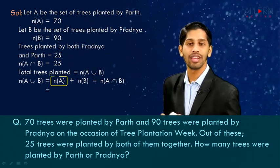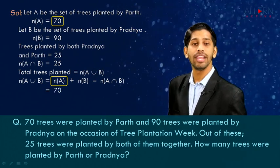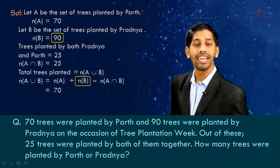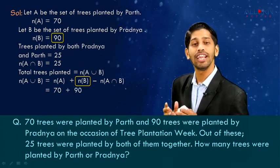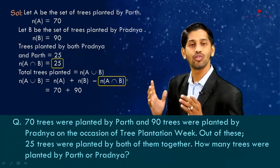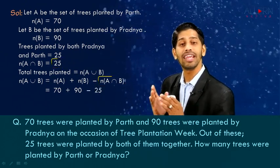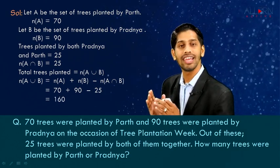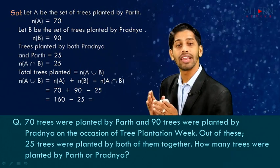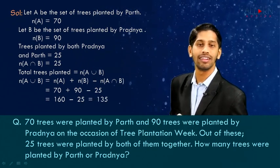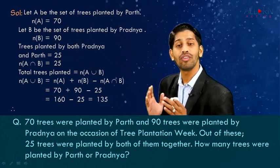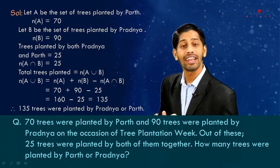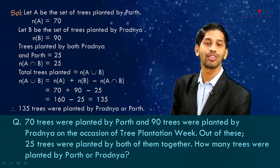Let's substitute the values given to us. In place of n(A) we substitute 70, plus in place of n(B) we substitute 90, minus in place of n(A ∩ B) we substitute 25. Now let's do the calculation: 70 + 90 = 160, and 160 − 25 = 135. Therefore, the number of trees planted by Parth or Pratnya is 135, or we can write: 135 trees were planted by Parth or Pratnya.